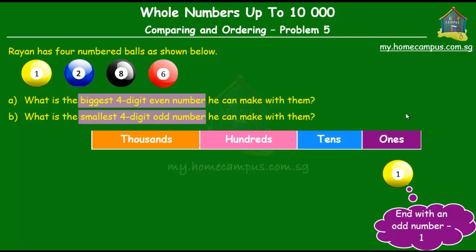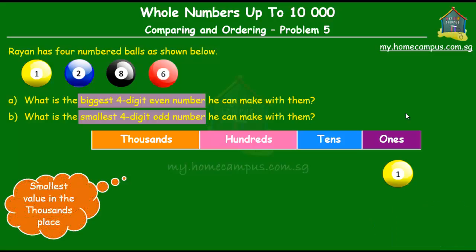And then from here we proceed as usual. We start with placing the smallest value in the thousands place. Now that's because the number has to be the smallest four-digit odd number. So now we have 2, 8, and 6 left with us, and out of these, 2 is obviously the smallest.